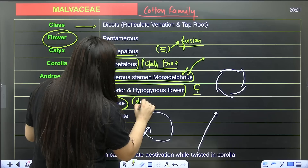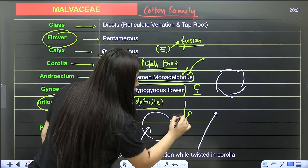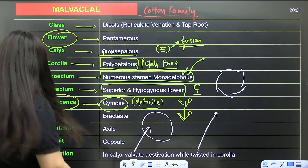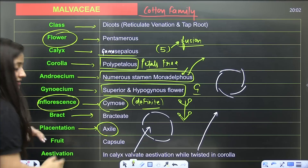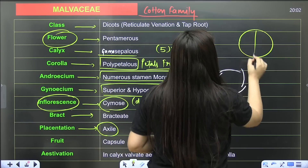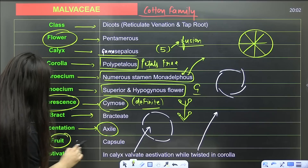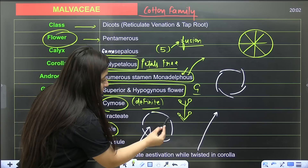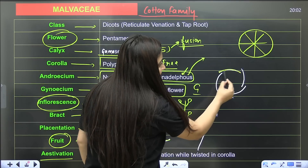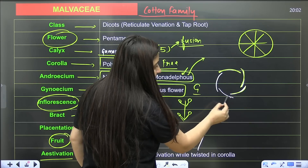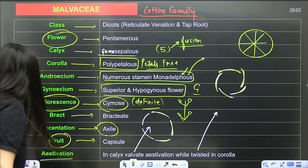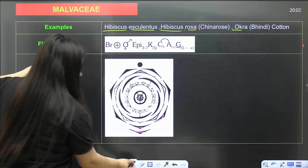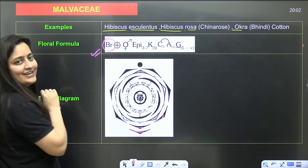In cymose inflorescence, definite growth is there; newly formed flowers are at the base and the older one is near the growing point. Bracteates are present. Placentation is axile — as seen in lemon and tomato. Ovary can be multilocular. Fruit is capsule. Aestivation of calyx is valvate, and petals show twisted aestivation — one end covered by another. Examples: Hibiscus esculentus, Hibiscus rosa-sinensis (China rose), okra, and cotton.